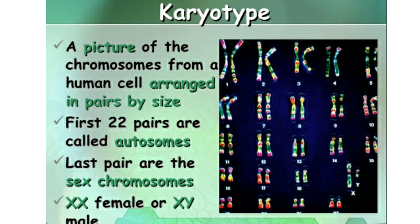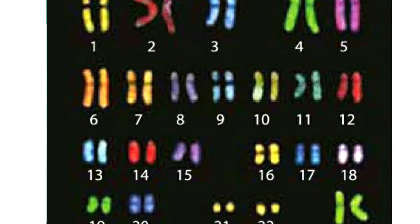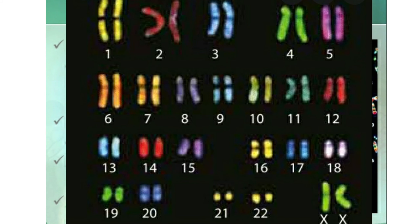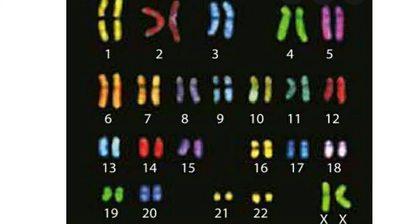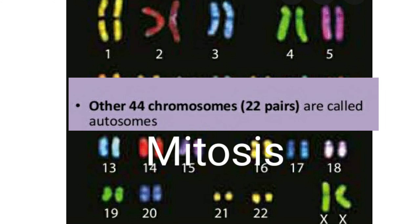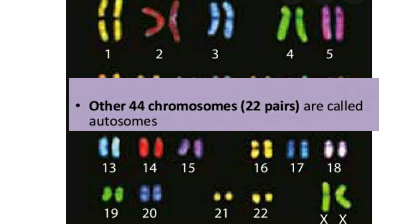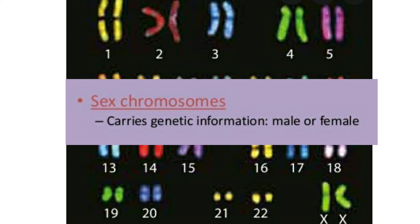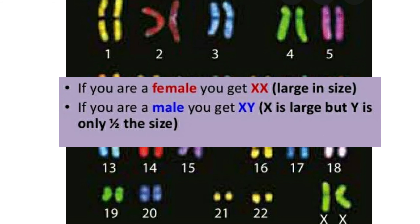The arrangement of chromosomes in pairs according to size is called a karyotype. In a human cell karyotype, 23 pairs are arranged: the first 22 pairs are called autosomes and undergo mitotic cell division, or mitosis. The last pair are the sex chromosomes — XX in females and XY in males — and these undergo meiotic cell division, or meiosis.